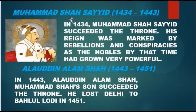Muhammad Shah Sayyid ruled from 1434 to 1443. In 1434, Muhammad Shah Syed succeeded the throne. His reign was marked by rebellions and conspiracies, as the nobles by that time had grown very powerful.